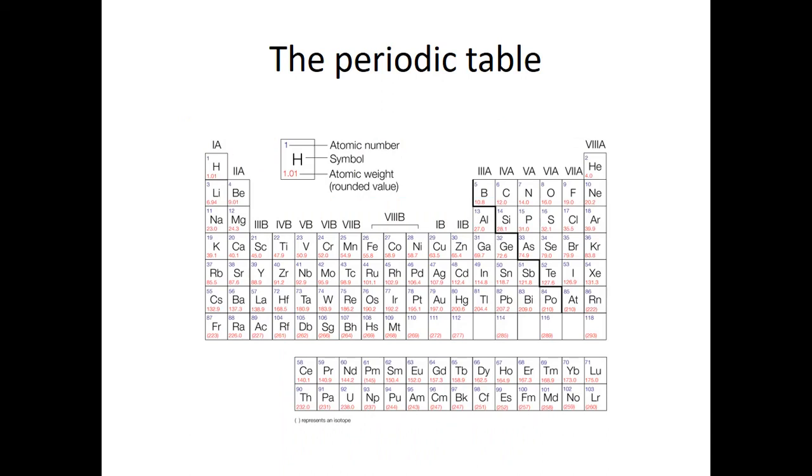The periodic table lists all of our known elements. Here we can see the periodic table. The atomic number on the top left, that is how many protons are in the nucleus. The atomic weight is the average mass of all the protons and neutrons in the naturally occurring isotopes.